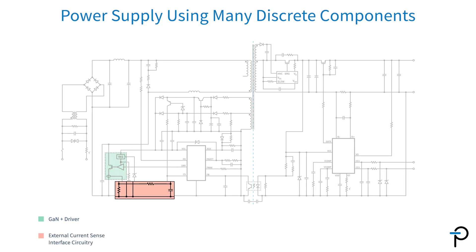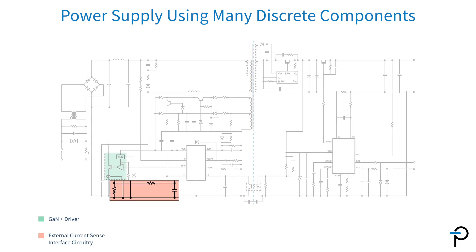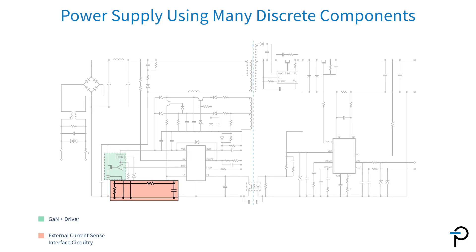I've just highlighted the external current sensing. That circuitry requires interface logic, amplifiers, and design. It also tends to limit the dynamic range of the power supply in both voltage and current.